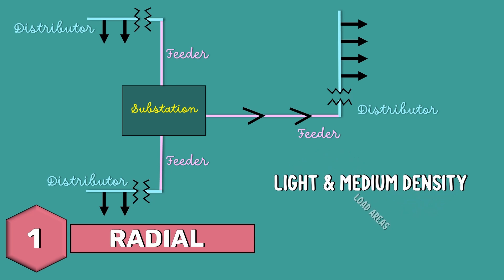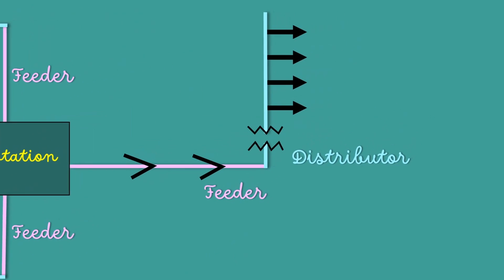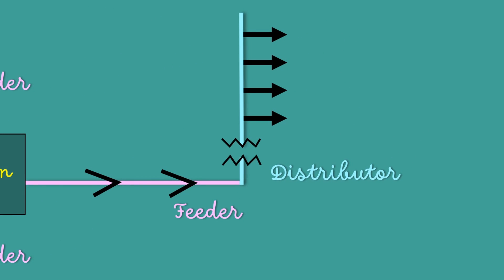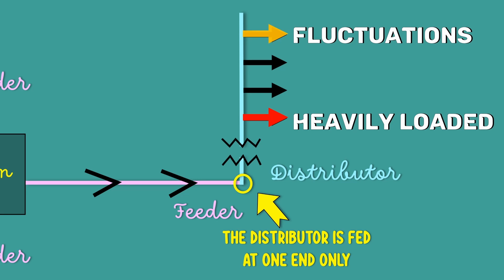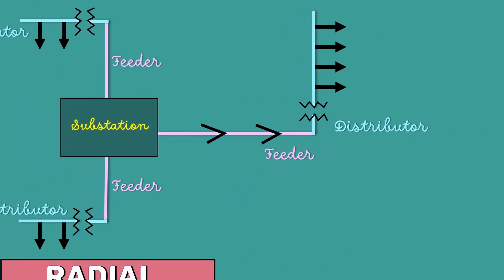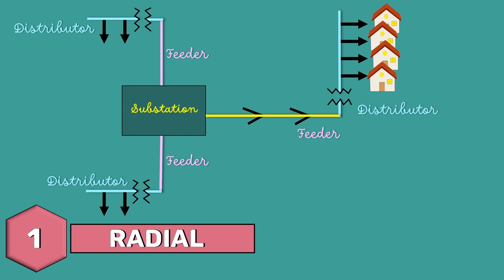This system has some drawbacks. If you look carefully, you can understand that the distributor is fed at one end only. This end of the distributor nearest to the feeding point will be heavily loaded and the consumers at the distant end of the distributor would be subjected to serious fluctuations when the load on the distributor changes. Since the consumers are dependent on a single feeder and single distributor, any fault on the feeder or distributor cuts off supply to the consumers connected to the distributor.